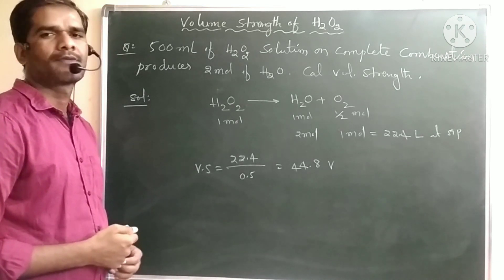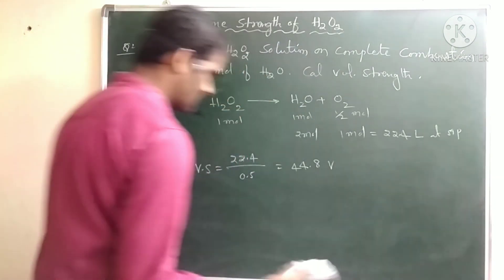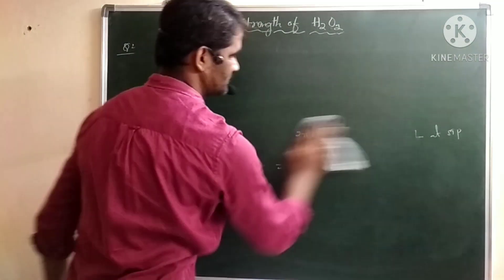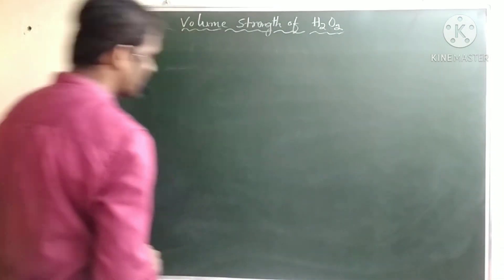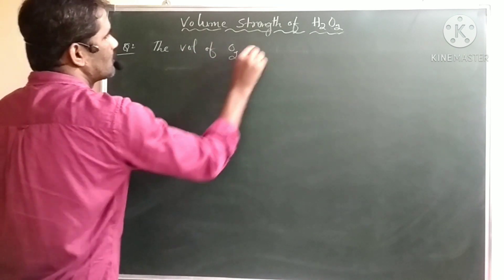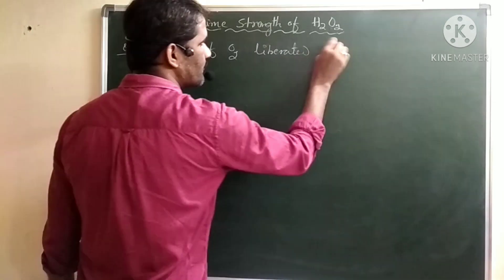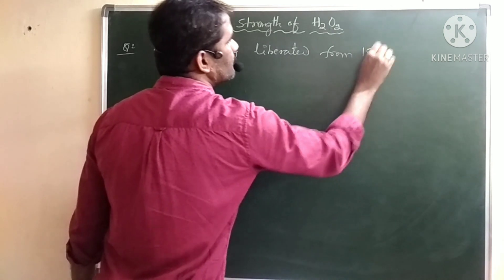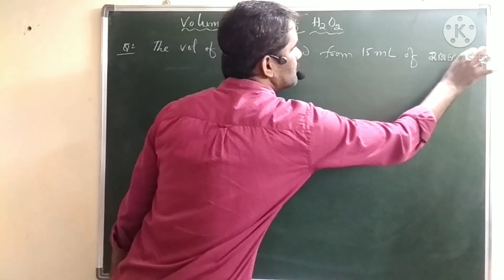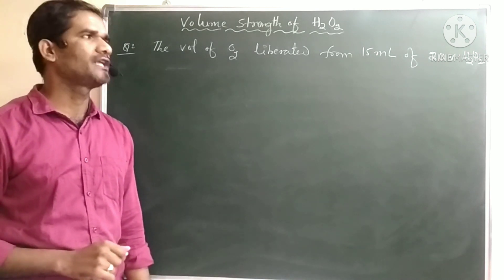The volume strength of the 500 mL H2O2 solution is 44.8V. Next question: Find the volume of O2 liberated from 15 mL of 20V H2O2.